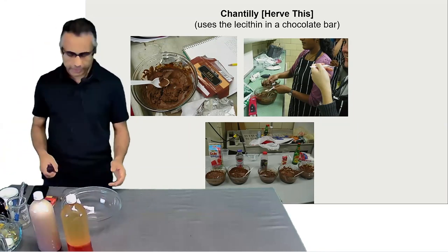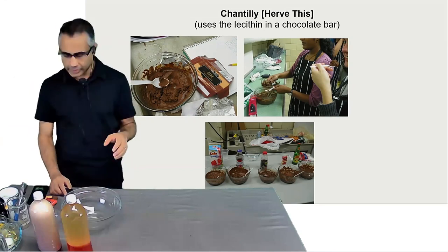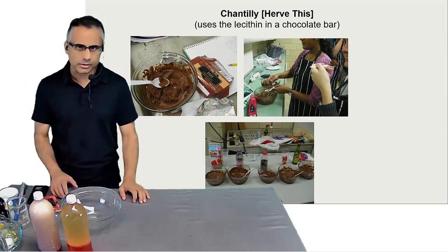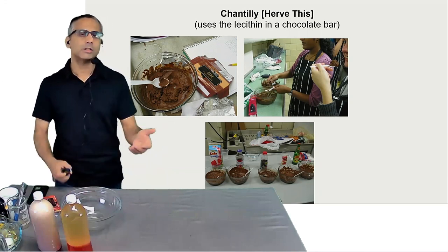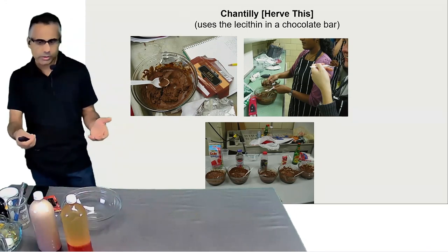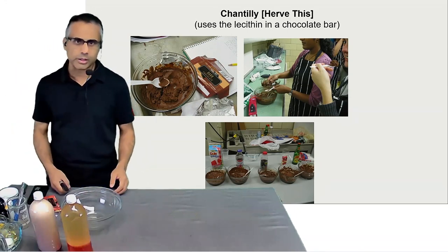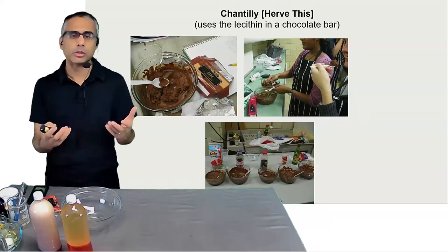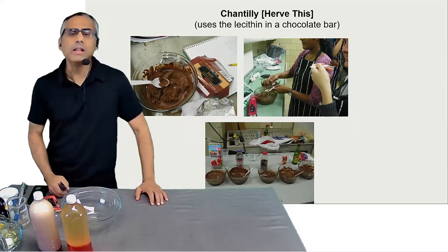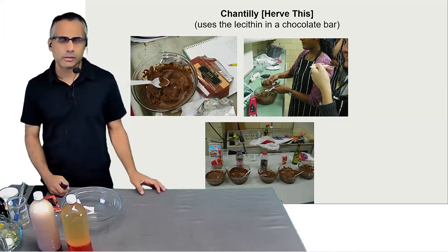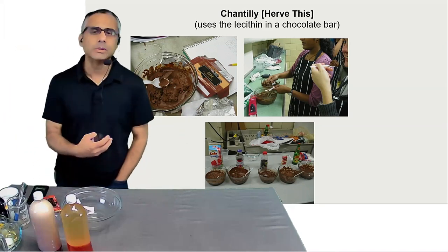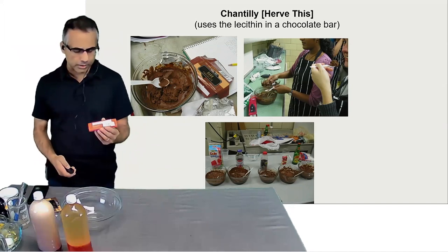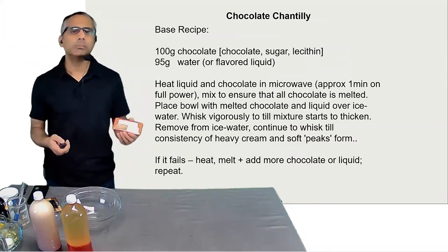Instead of doing a lecithin foam demonstration, I want to show you one of my favorite recipes, which uses the lecithin already in a chocolate bar. This is chocolate Chantilly — or chocolate mousse. Chantilly cream is whipped cream with vanilla and sugar; chocolate Chantilly gives you a whipped-cream-like mousse made with chocolate instead of milk cream. This recipe originated, as far as I know, from Hervé This, a French physical chemist, who uses the fact that lecithin is already present in a chocolate bar.